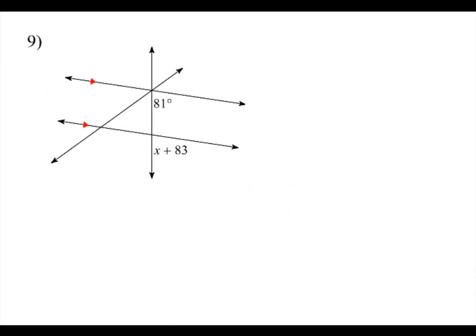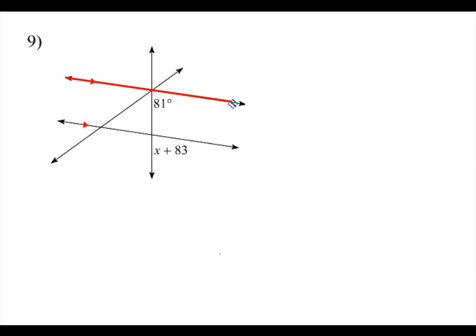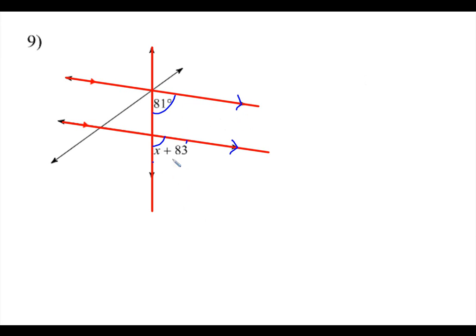Number nine: the diagram looks a little more complicated, but don't let it fool you. We have this line here and a parallel line, with a transversal cutting through the two lines. The other line we can ignore. So we're going to focus on these two angles, which are corresponding angles. Since the lines are parallel and the angles are corresponding, they have to be equal. So 81 is going to equal x plus 83 — minus 83 on both sides — so x is going to be negative 2.